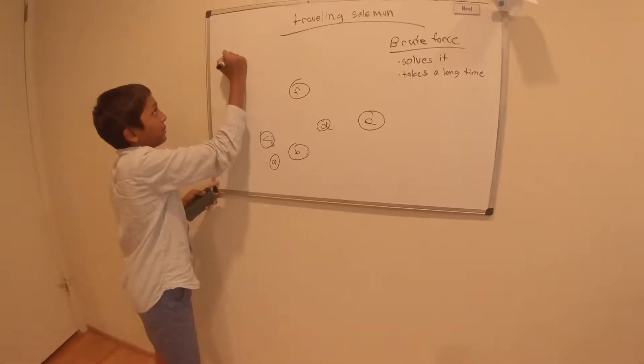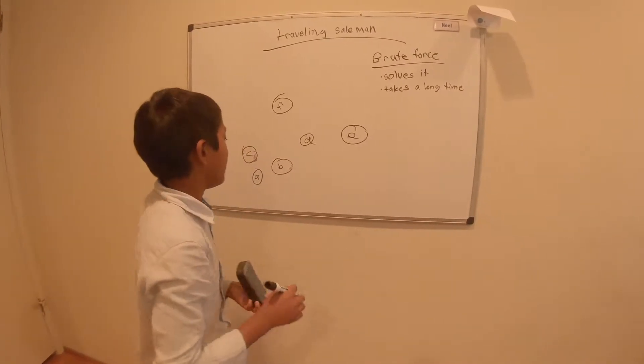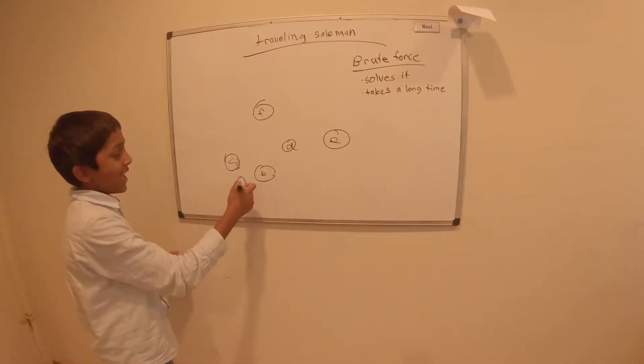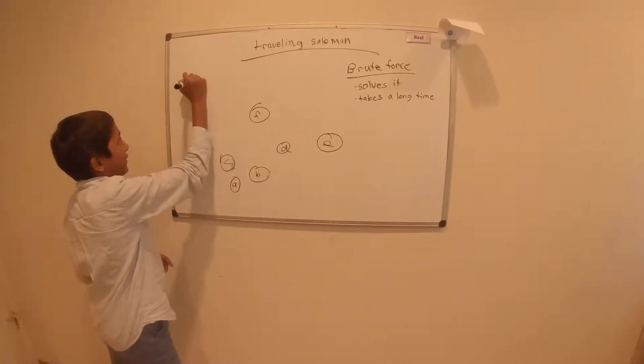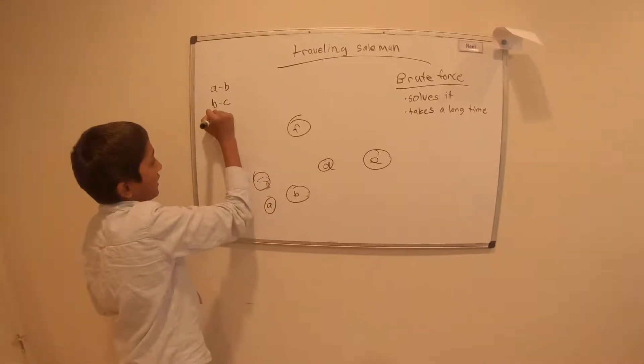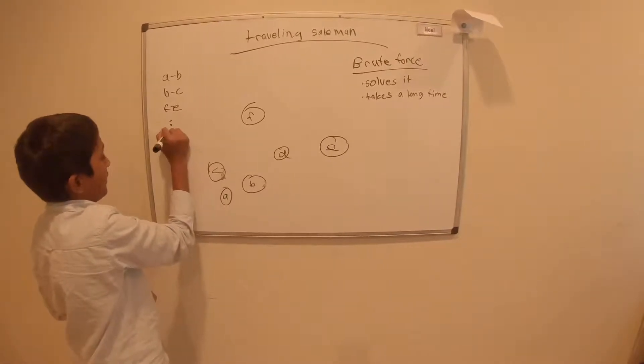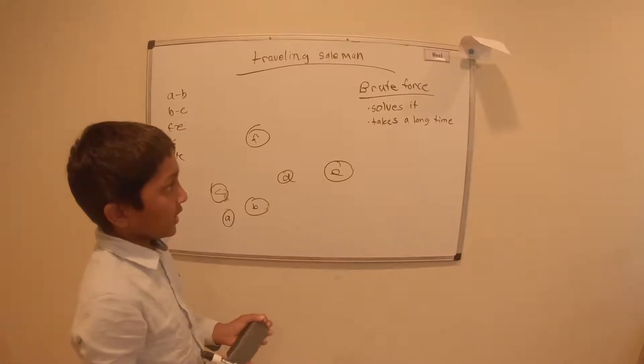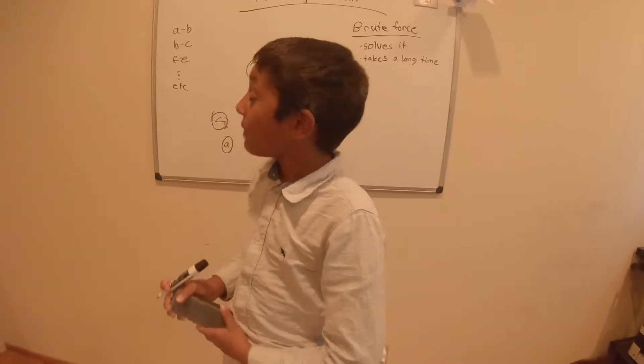So you would make like a dictionary, and the key would be like A B and the value would be the time. So you would list it for like A B and B C, F E, and so on. You would list it for all of them, you'd calculate it, and then you'd save it for when you need it.